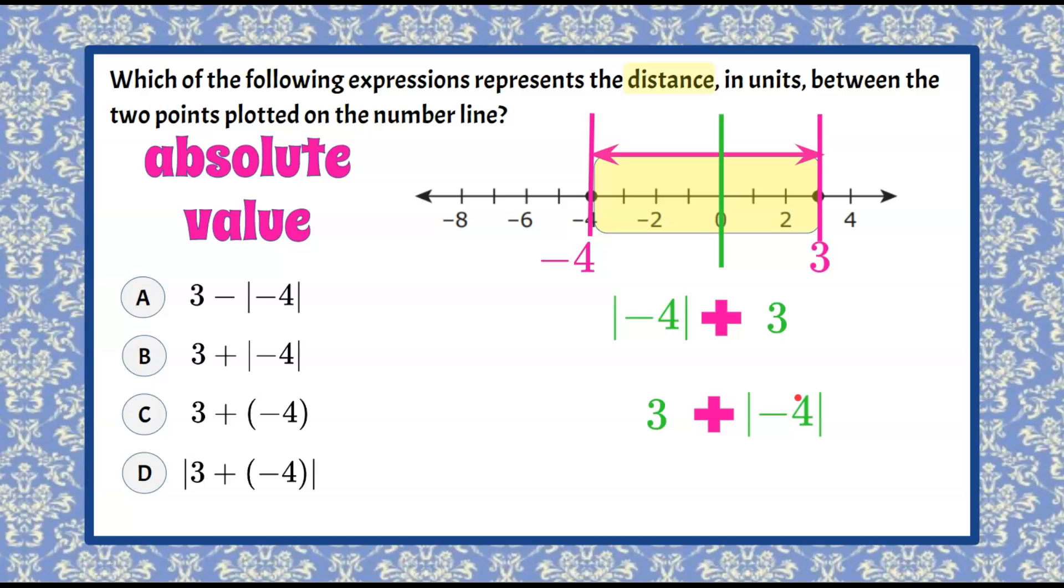Now let's go back and check our answer choices and we can see that it corresponds to answer B. And if we check our work, three plus the absolute value of negative four, well the absolute value of negative four is positive four. Three plus four is seven, which was the distance that we found by counting.